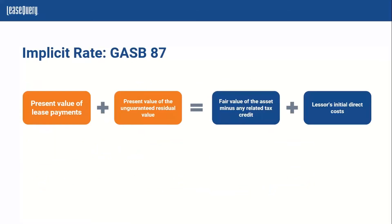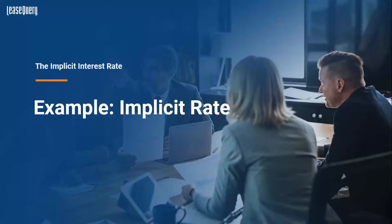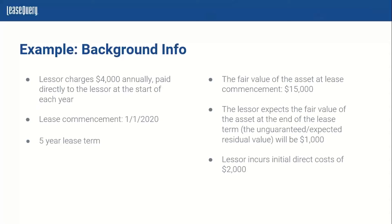Comparing this to the other standards, we still have the present value of the lease payments, the present value of an unguaranteed residual value, and also the fair value of the asset minus the related investment tax credit, similarly to ASC 842. Now we're going to look at an example using Excel's internal rate of return, or IRR, function with some background information.